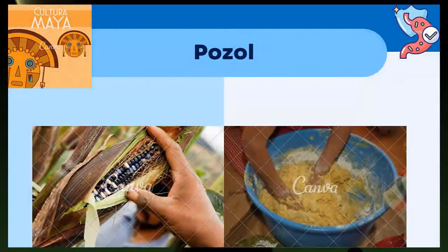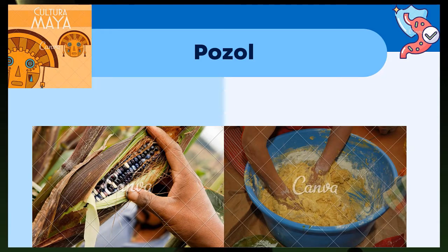También se elaboran bebidas tradicionales a partir del maíz, como el pozol, bebida fermentada ácida, no alcohólica, hecha con masa nixtamalizada de origen maya, que se elabora en el sureste de México. Estudios reportaron que contiene bacterias de los géneros Streptococcus, Weissella, Leuconostoc, Pseudomesenteroides y Paramesenteroides, con potencial probiótico.